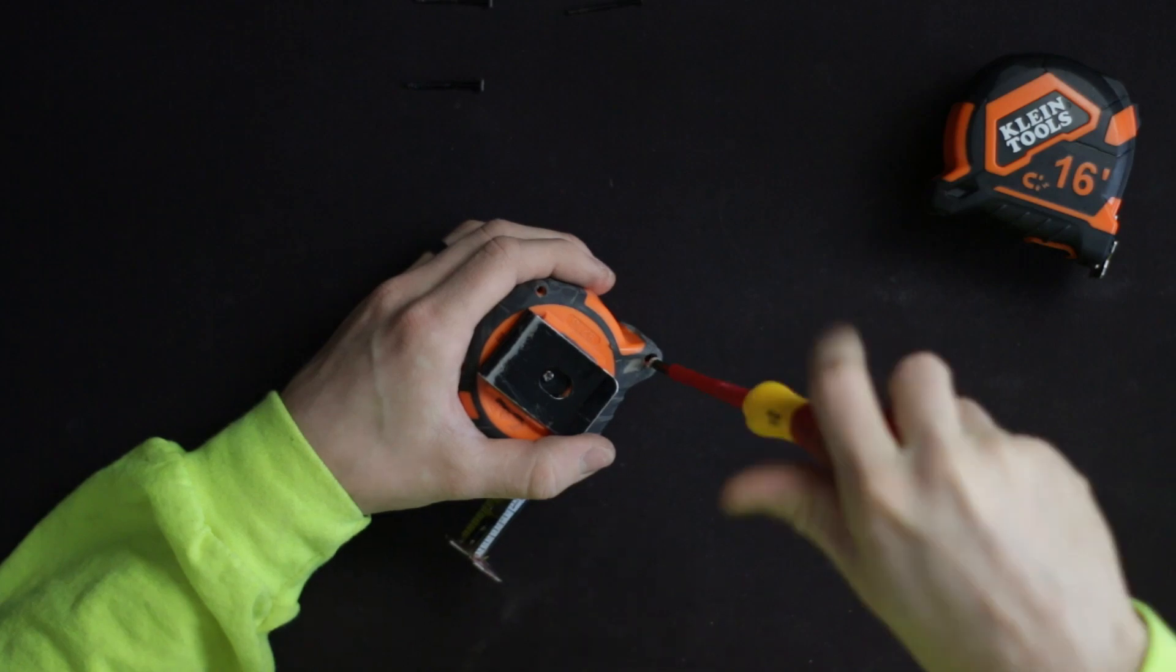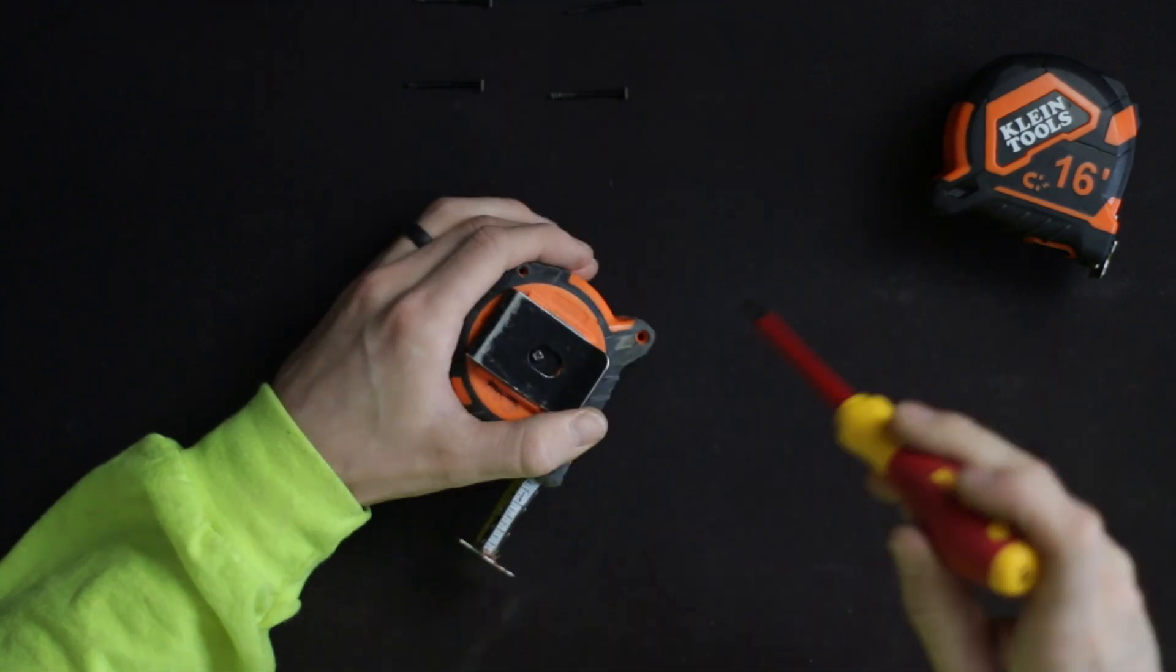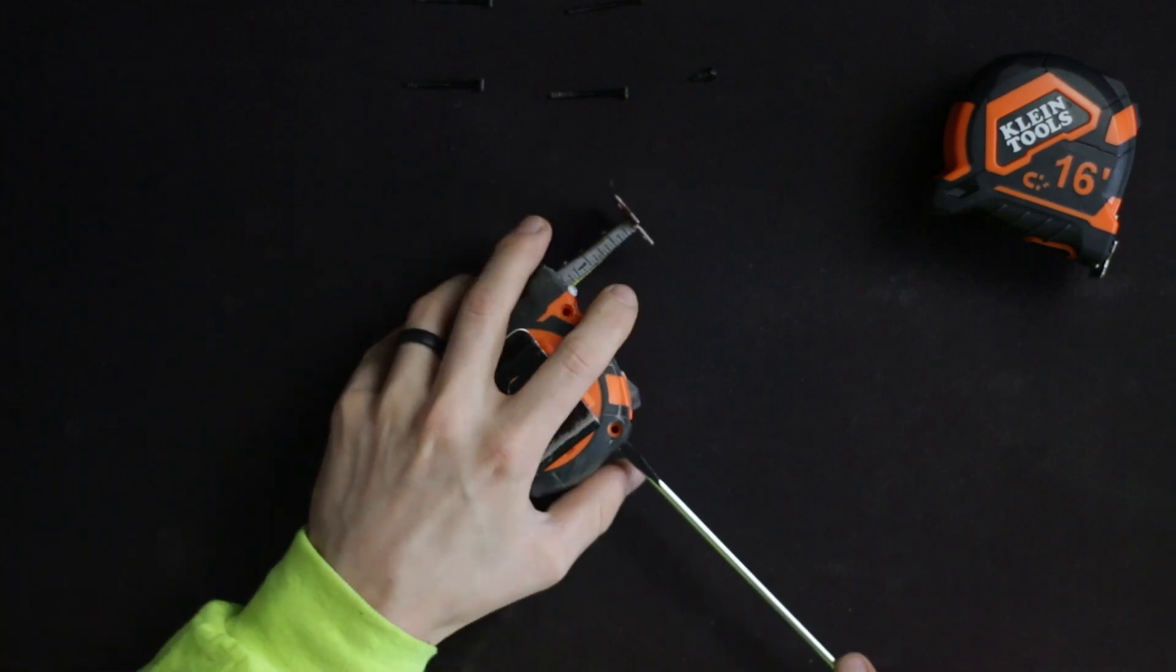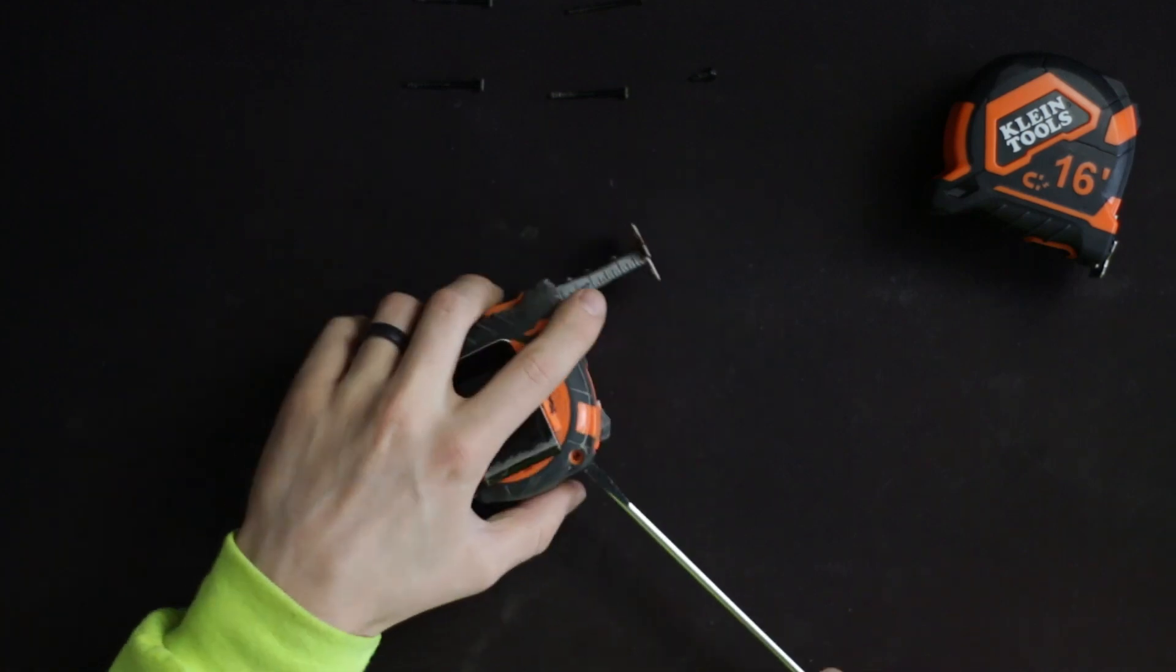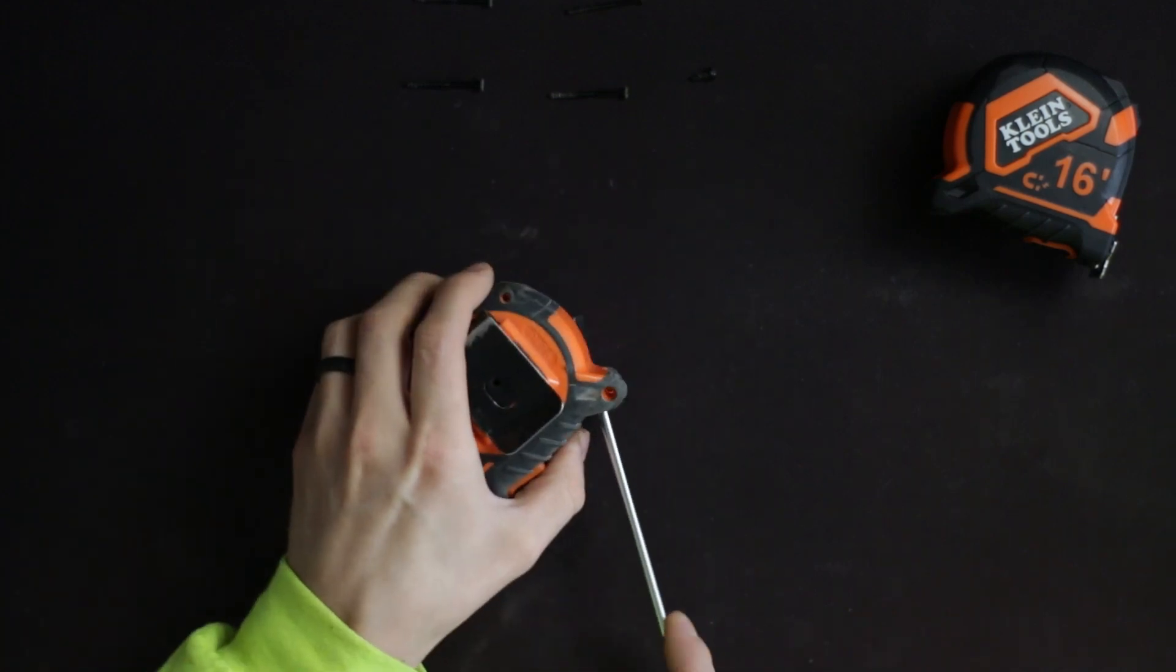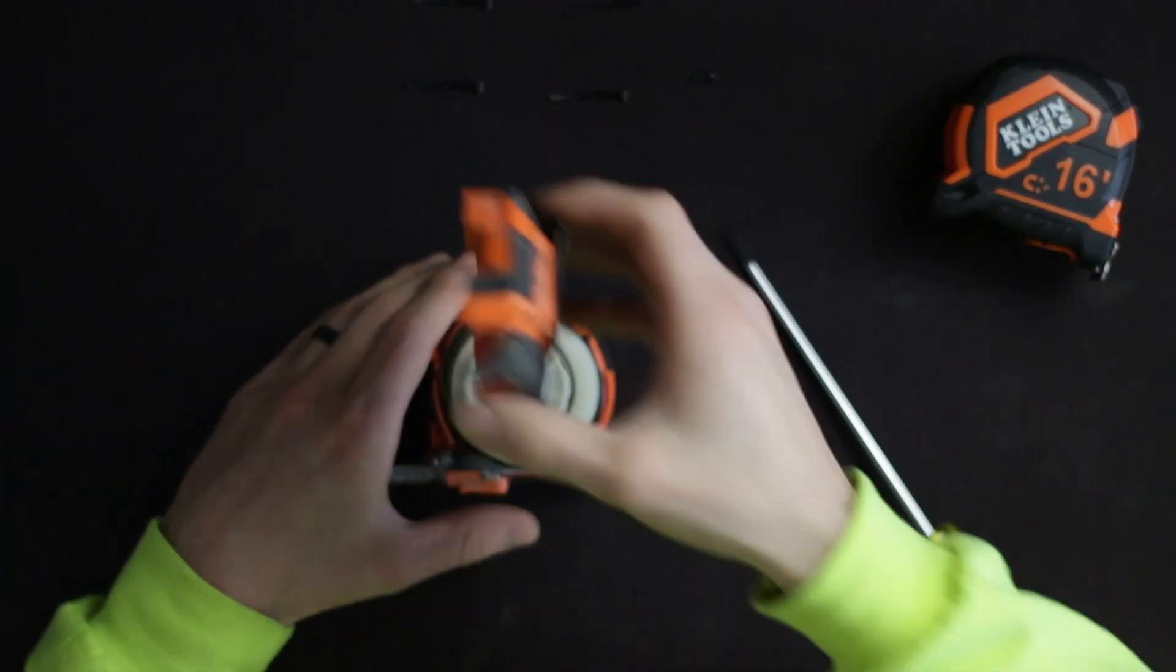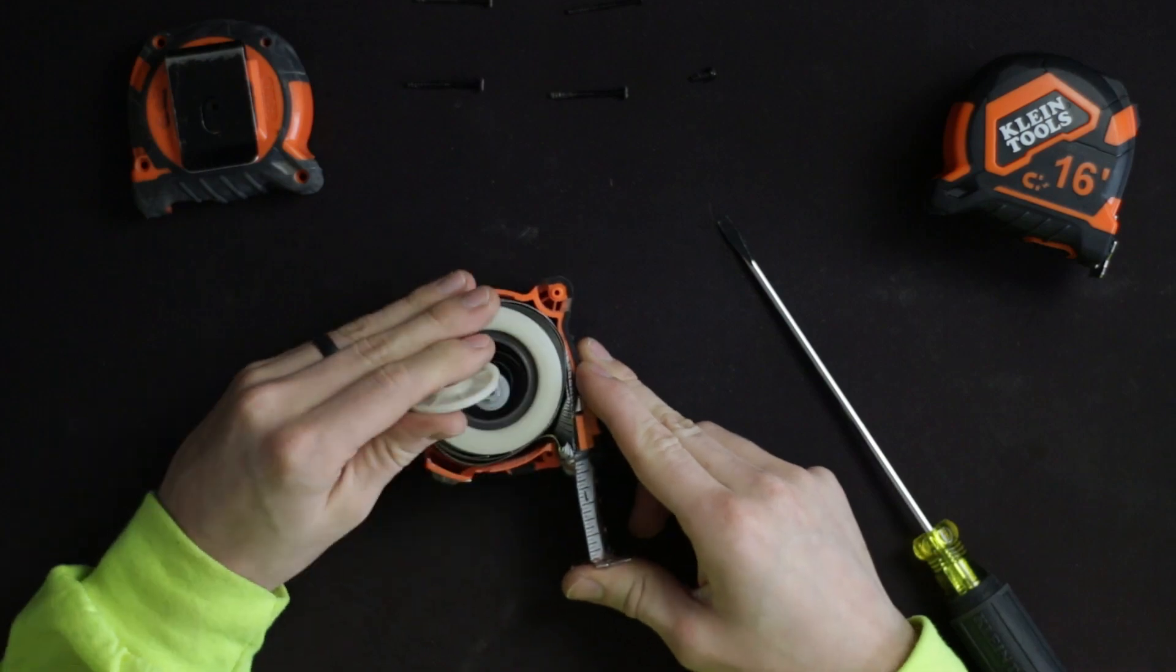But instead of just replacing this, we have the means to do so and thought it might be fun and we can get a video out of it. We're going to be keeping the old case of this tape measure and just replacing the tape itself. So I bought a brand new Klein 16 foot and we're just going to be replacing the tape out of it.